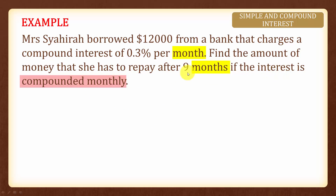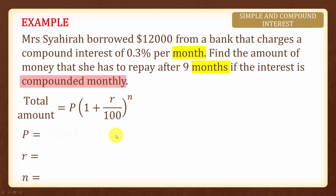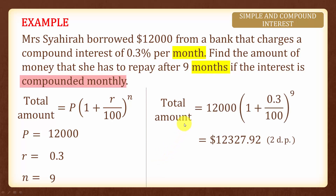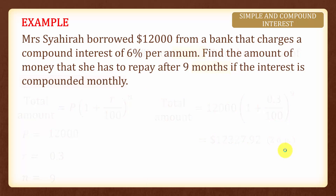Since all the time units are the same, we can simply apply the formula without converting any of the numbers. We will have the total amount to be twelve thousand three hundred and twenty-seven dollars and ninety-two cents, rounded to two decimal places.